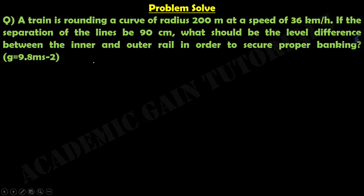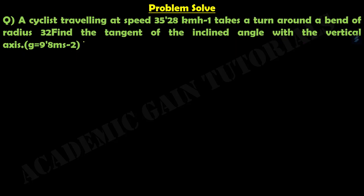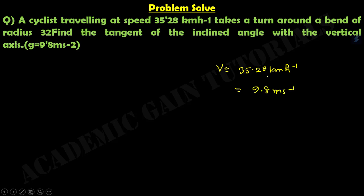Now we will see this problem statement. It says that a cyclist travelling at a speed of 35.28 km per hour, so the velocity of the cyclist is 35.28 km per hour, which is equal to 9.8 meter per second approximately.